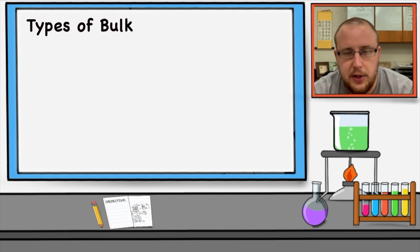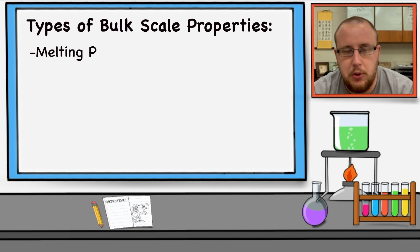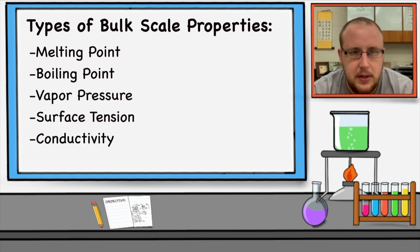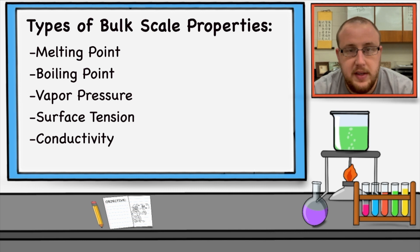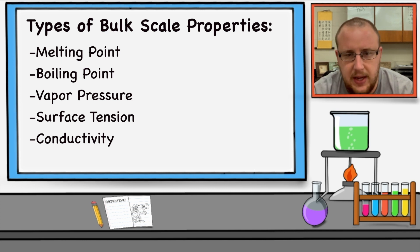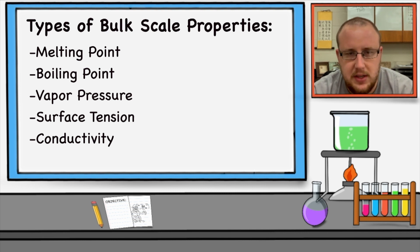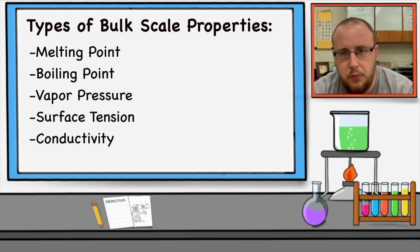In this class, we're going to talk about five types of bulk scale properties: melting point, boiling point, vapor pressure, surface tension, and conductivity. All these properties can vary in their strength from atom to atom or from molecule to molecule. The more molecules and the more forces we have interacting with each other, the stronger the property that is exhibited.